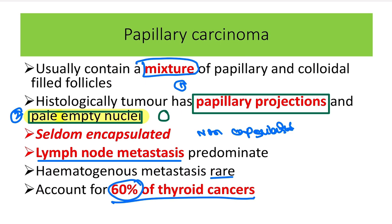To recapitulate: papillary carcinoma is a mixture of papillary and colloid-filled follicles. Histologically, there is papillary projection and orphan Annie nuclei — pale empty nuclei. It is non-capsulated, lymphatic metastasis is very common, and hematogenous metastasis is very rare.